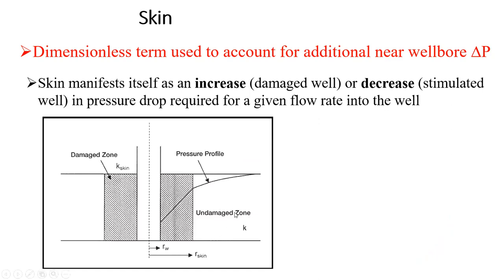We have the undamaged zone and we have the damaged zone. Looking at our pressure profile, if you trace it, it follows a particular path. But when the pressure profile gets into the damaged zone, there is an additional drop. This additional drop is a result of damage — there is some kind of extra resistance to the flow of fluids created as a result of the damage of that zone close to the wellbore.